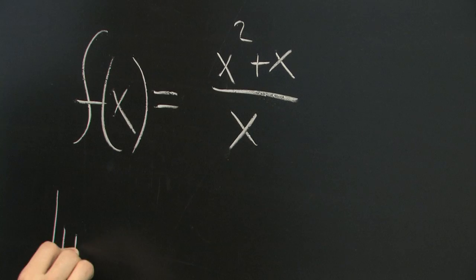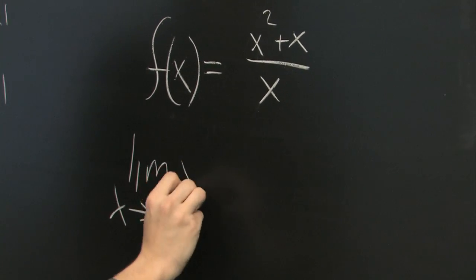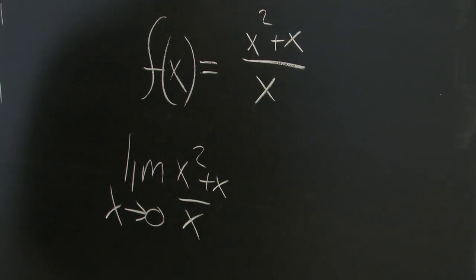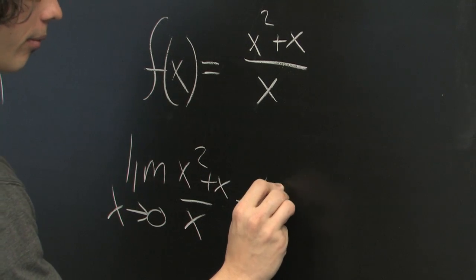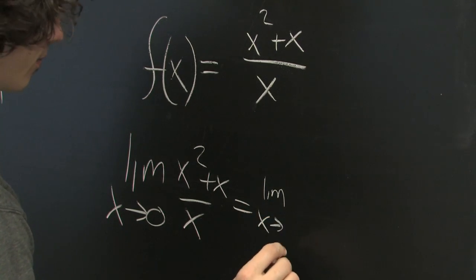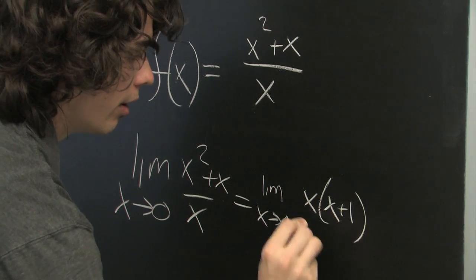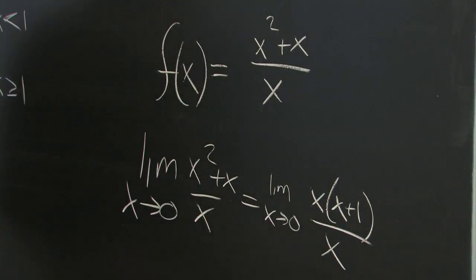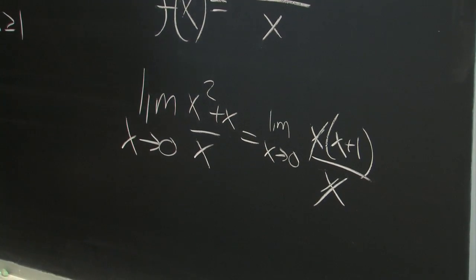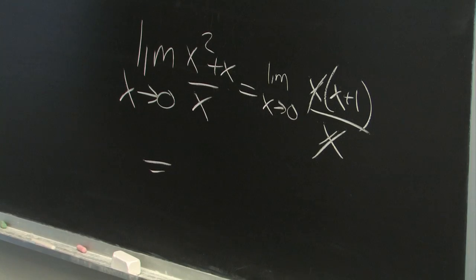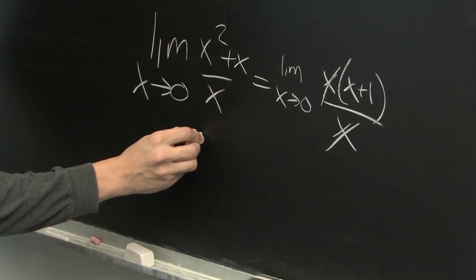So if we want to see what is the limit as x approaches 0 of x squared plus x over x, well, we can factor the numerator and we get x times x plus 1 over x. We can cancel out the x in the numerator and the denominator and what we are left with is the limit as x approaches 0 of x plus 1, which is simply 1.